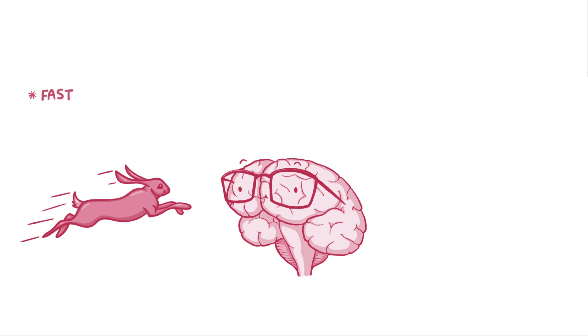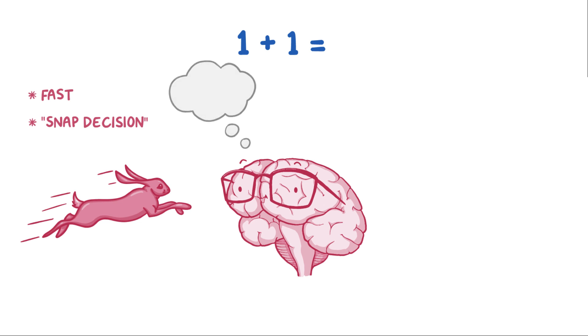System 1 thinking is fast. It's what people call a snap decision. For example, if asked what 1 plus 1 is, most people automatically blurt out 2 without consciously thinking about it.